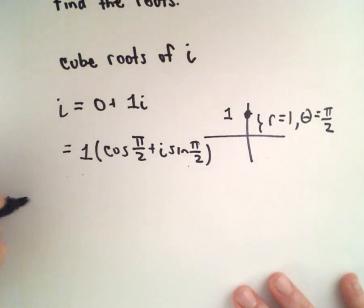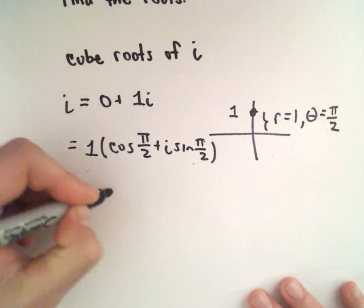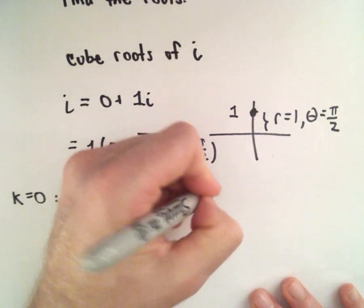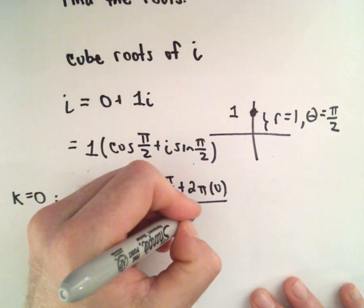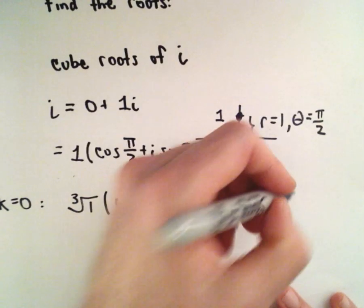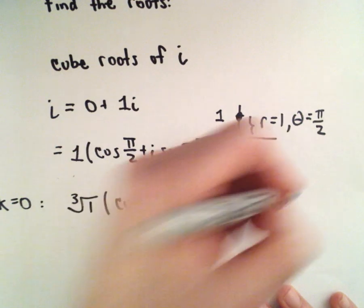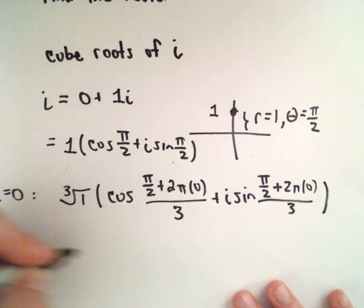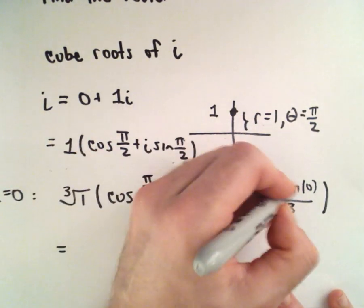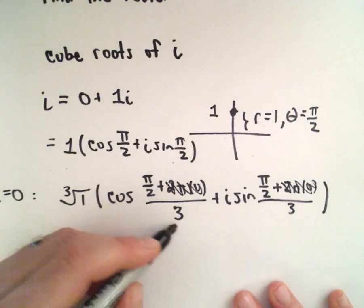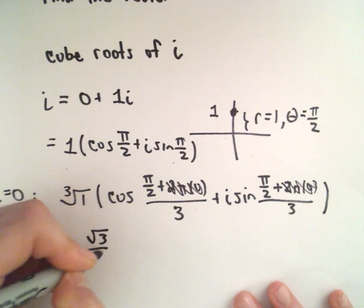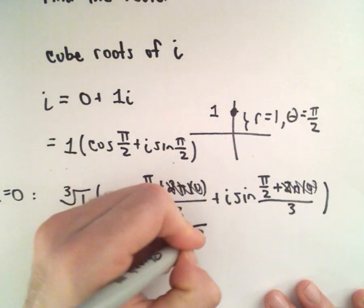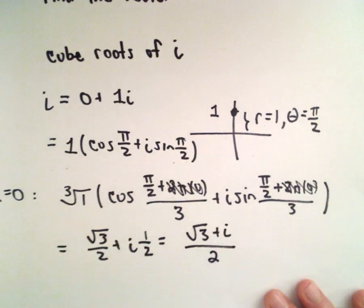When k equals 0, we have the cube root of 1, multiplied by cosine of (pi over 2 plus 2pi times 0) all over 3, plus i times sine of (pi over 2 plus 2pi times 0) all over 3. The cube root of 1 is just 1. The 2pi times 0 terms vanish, leaving pi over 2 divided by 3, which is pi over 6. Cosine of pi over 6 is root 3 over 2, and sine of pi over 6 is 1/2. So our first solution is (root 3 + i) / 2.